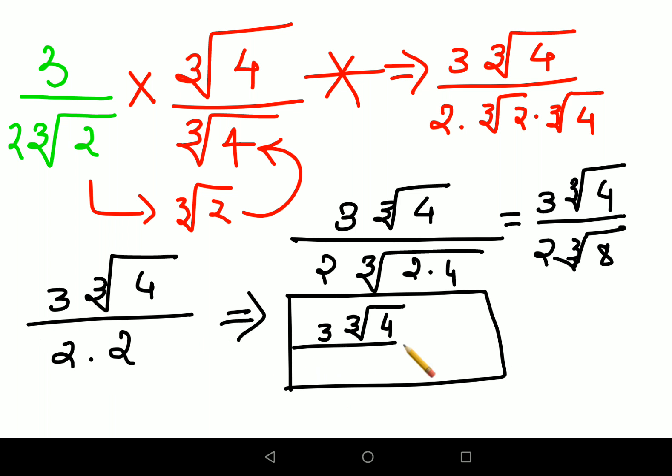So your final answer is 3 times cube root of 4 upon 8. That, my dear friends, is your final answer for this simple-looking question. If you have any doubts, please mention them in the comment section. I'll see you in the next video.